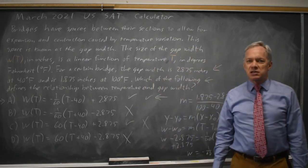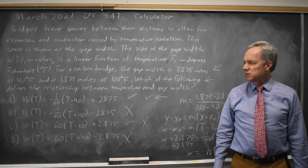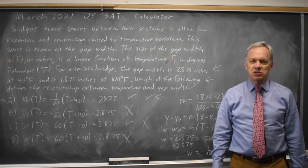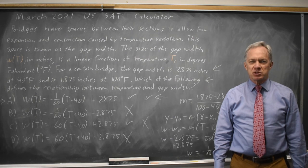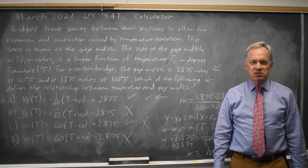In this case, substituting in points into answer choices is easier and faster than solving for the slope and then writing in point-slope form, but all correct answers are of course correct.